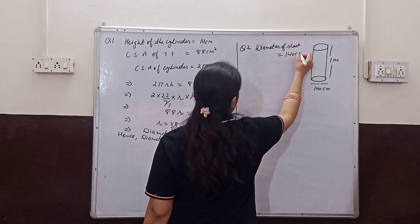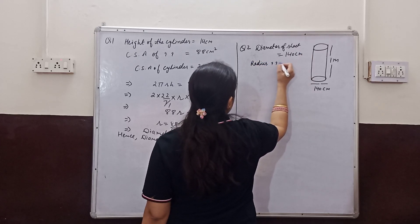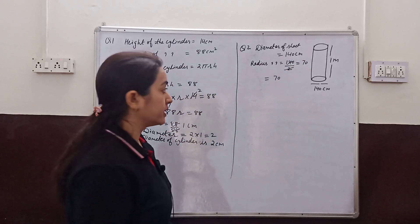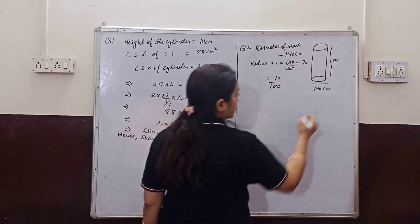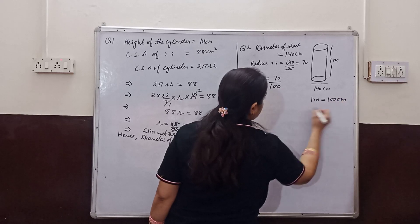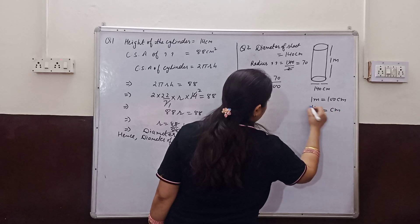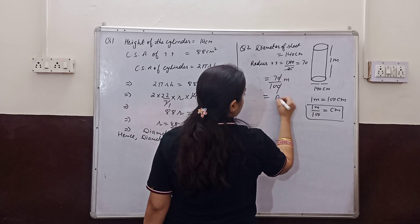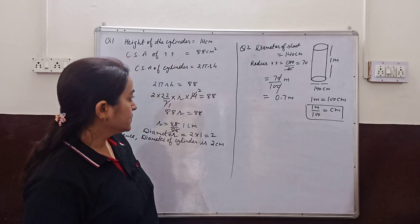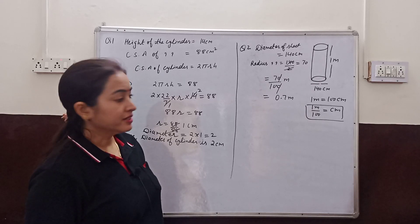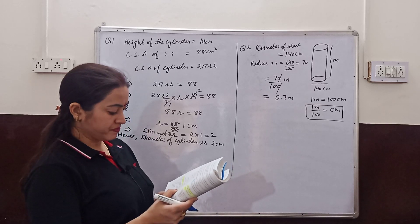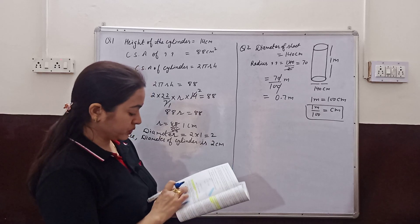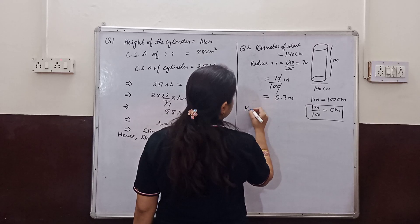We need to convert units. The radius is 70 cm, which we divide by 100 to convert to meters, so radius equals 0.7 meters. The height is 1 meter, which equals 100 cm. So the radius in meters is 0.7 m and the height is 1 m.